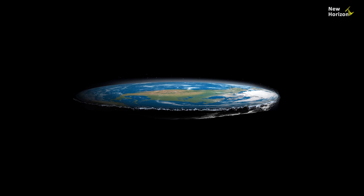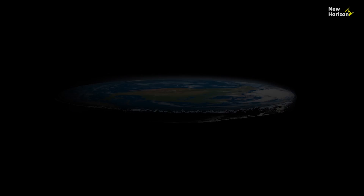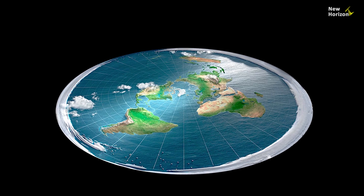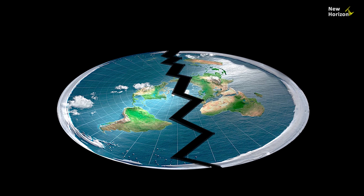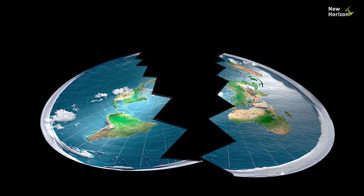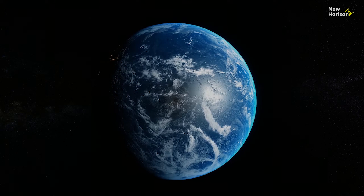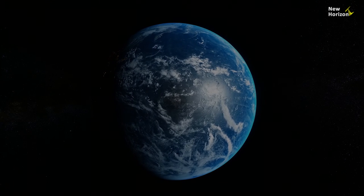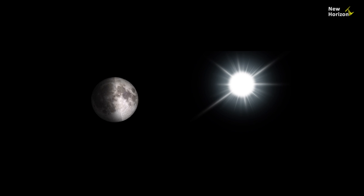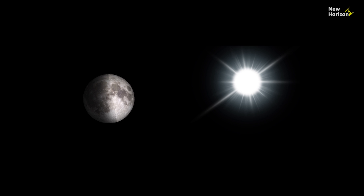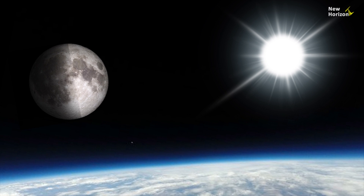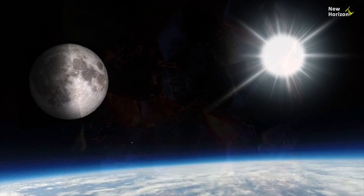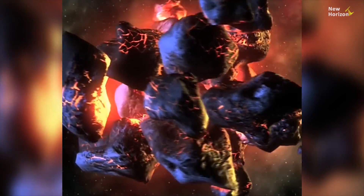A massive body can't survive as a flat disk. As mass increases, gravity becomes so strong that it collapses a massive disk into a spherical ball. But flat earthers don't believe in gravity. They should explain why the Sun and moon are spherical — if the Sun and moon can be spherical, why not the Earth? It is impossible for a massive celestial object to survive in a disk shape.